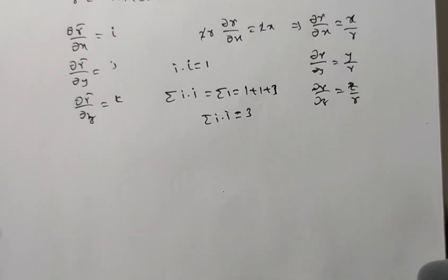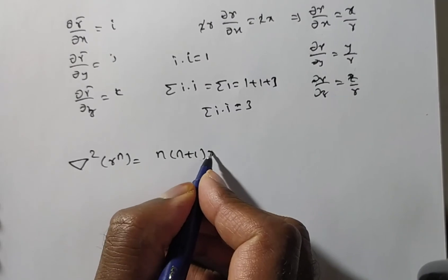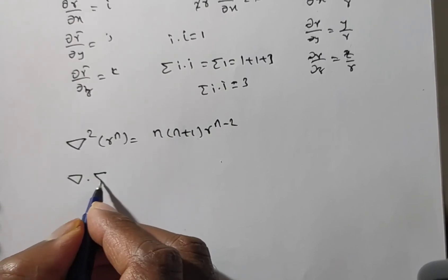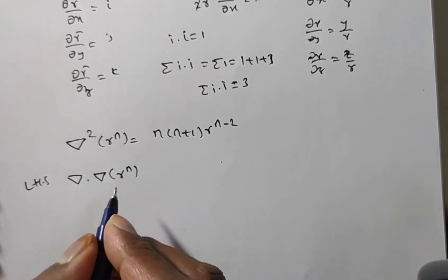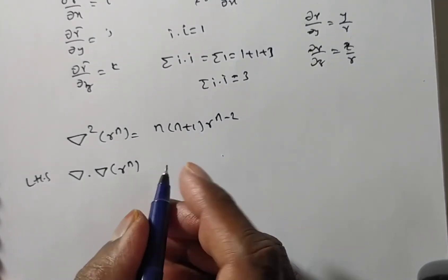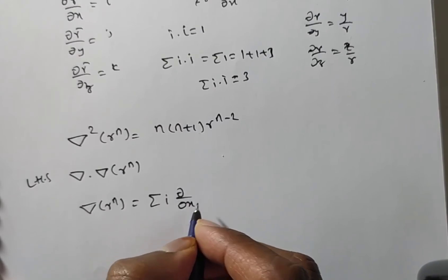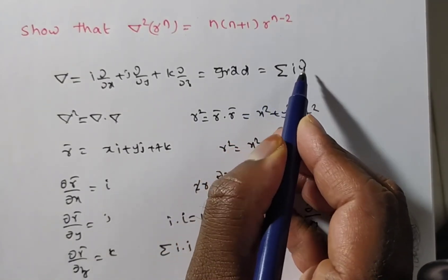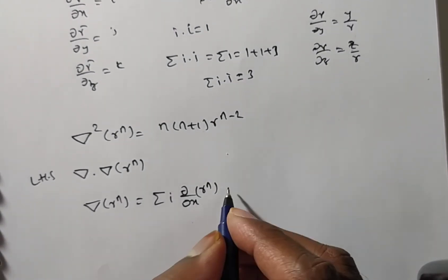Now we prove del²(rⁿ) = n(n+1)rⁿ⁻². Taking the LHS: del²(rⁿ) = del·del(rⁿ). First I compute del(rⁿ). Del(rⁿ) = summation of i·(∂/∂x)(rⁿ), since grad can be written as summation of i·(∂/∂x).